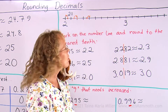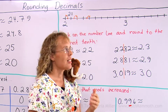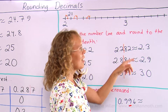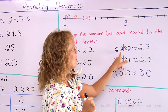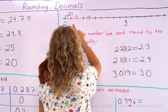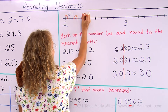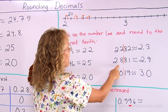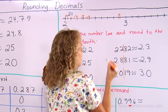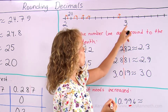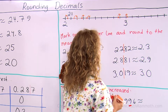Still rounding to the nearest tenth — let me put these lines here. 8 means we round up, so I get 2.3. 8 means I round up, so I get 2.9. 1 means I round down, so I get 3.0. Now marking those on the number line: for 2.282, I go to 2.2 and then to the eighth tick mark and a little bit further — it rounds to 2.3. 2.881 is 2.8, and rounding up gives 2.9. 3.019 is 3.0 and then just past the first tick mark — rounding gives 3.0.